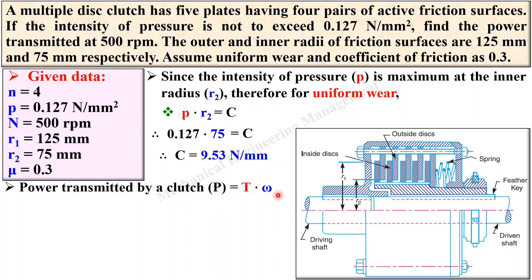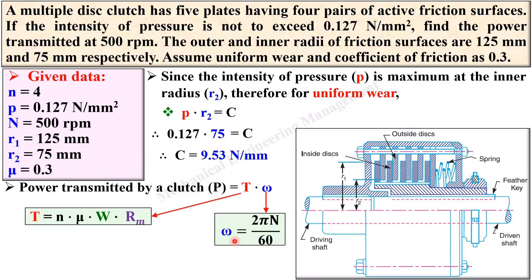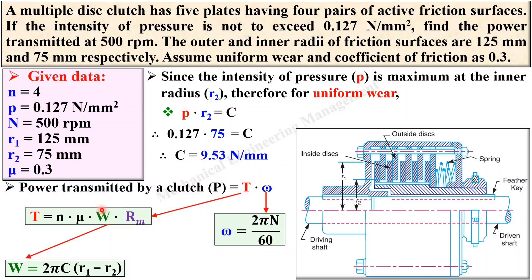You know that power transmitted by a clutch is equal to T × omega. Another formula is P = 2πNT / 60. You can apply either one. We do not yet have the value of T, but you can find T using the torque equation. For omega, the equation is omega = 2πN / 60, which gives the angular velocity. You have N, so you can find omega. Both W and rm are unknown parameters — you can apply the respective equations for each.